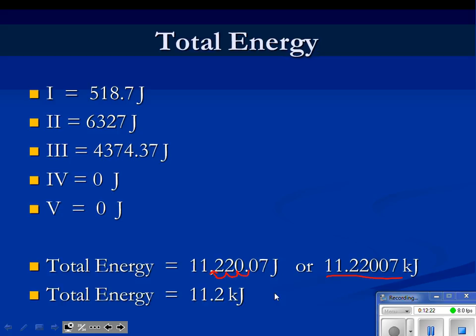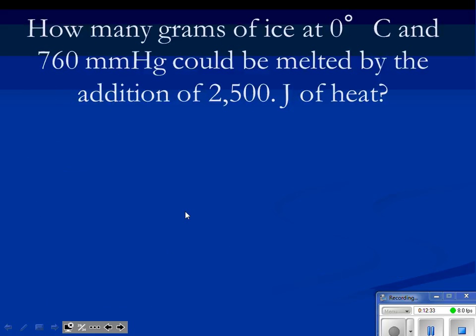We've got one more example to work, and you're going to find out it's pretty easy. Here is what you're going to see on WebAssign also: how many grams of ice at zero degrees Celsius and 760 millimeters of mercury could be melted by the addition of 2,500 joules of heat? Go ahead and pause the video to write that down in your notes.